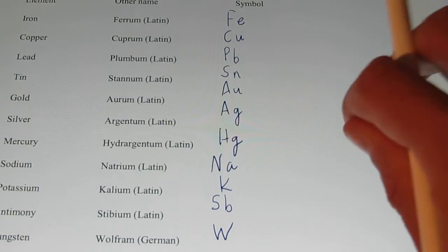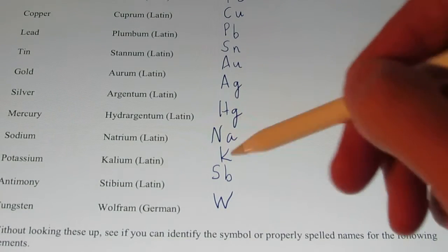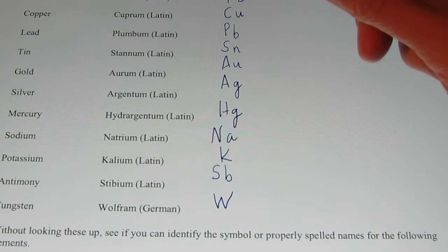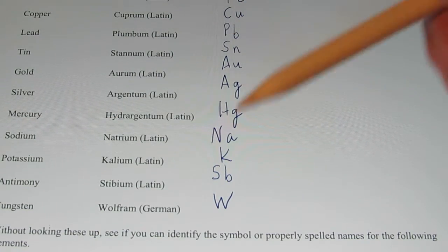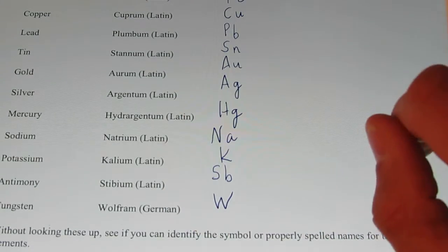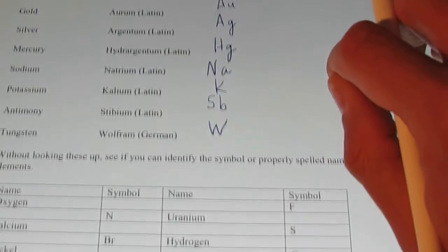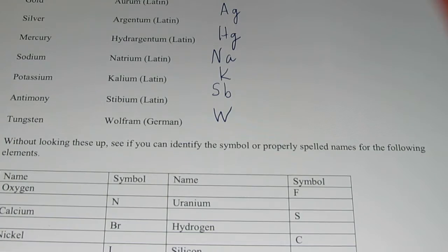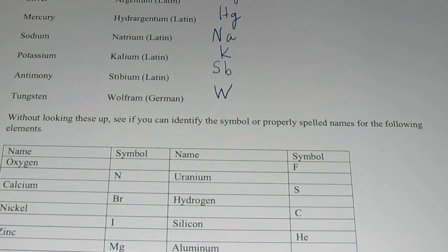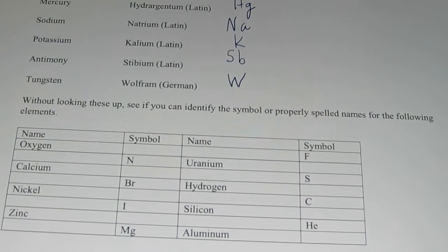So I've listed these 11 purposefully because their symbols really don't have a lot to do with the English version of their name. They come from their Latin, or in the case of tungsten, the German derivative of their name. Now, most of the element symbols, kiddos, you actually already know. And you probably already know how to spell them. But let's just practice a few of these.